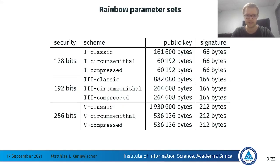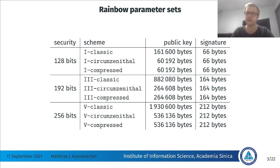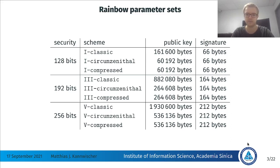Looking at the parameter sets, at each security level we have each of these variants. For example, for the first security level, the CC variant has 60 kilobytes of public key compared to the 162 kilobytes for Classic — quite significantly smaller public key. But the cost of this is quite huge for verification, so it really depends on what you're optimizing for.